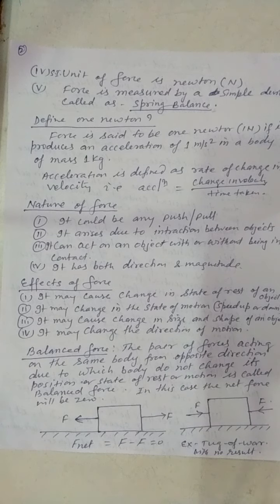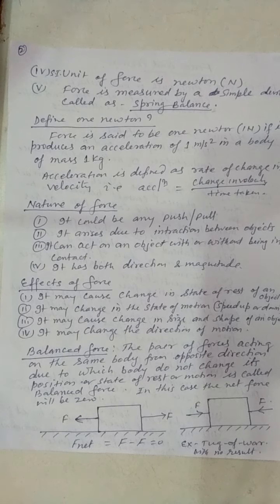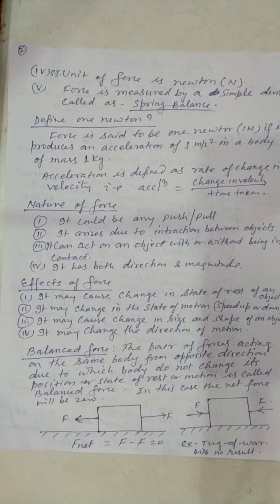Now come to balanced force. What do you mean by balanced force? It is in your syllabus in standard 8. Balanced force means a pair of forces acting on the same body from opposite directions. In this case, the net force will be 0. If you calculate the resultant force or net force in the case of balanced force, the net force will be 0 because the magnitudes of the forces are the same but the direction is opposite.